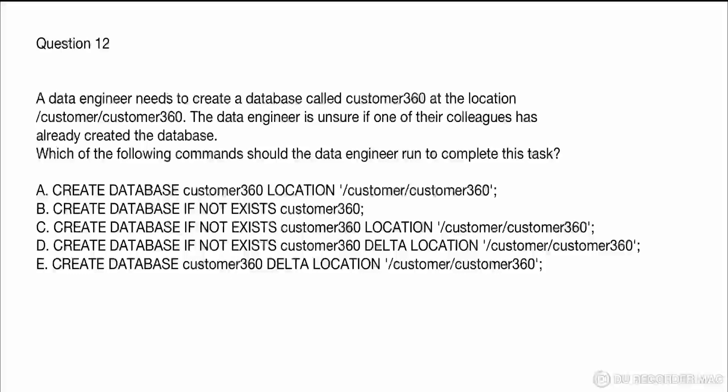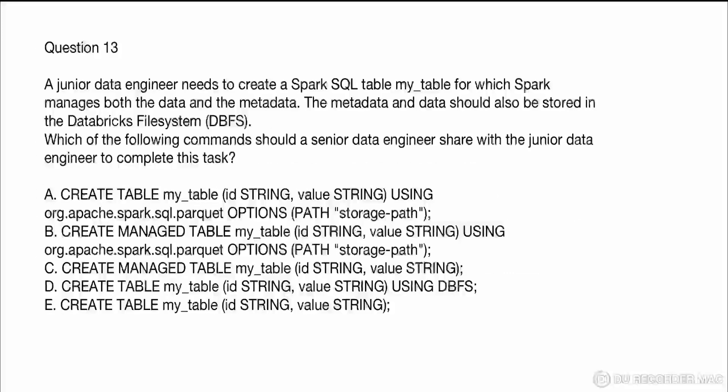Question 12: A data engineer needs to create a database called customer_360 at a specific location, but is unsure if a colleague has already created it. The solution is simple — use CREATE DATABASE IF NOT EXISTS with the database name and location. Option A has location but no IF NOT EXISTS. Option B has IF NOT EXISTS but no location. Option C has both, so C is correct. Option D uses incorrect 'delta location' syntax.